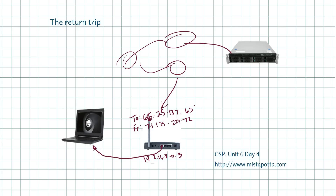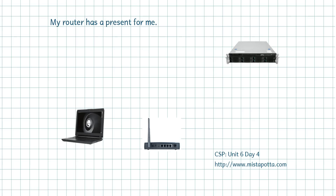The router sends that information to me, knowing two things: one, that it requested something from this IP address, and therefore it's expecting something from that IP address. This router and Google's router had a path in mind — actually several paths, with backup paths in case the first doesn't work out. So this is my return trip, and now my router has a present for me. It says, hey, you remember how you wanted that thing from Google? Well, 192.168.0.3, I have a present for you. And it gets put up here, and I see Google showing up on my screen.